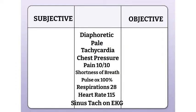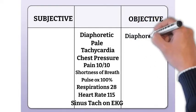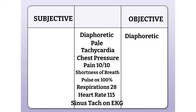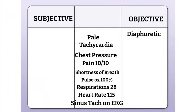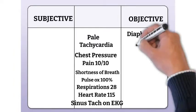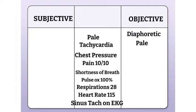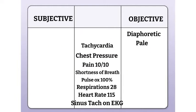The first piece of data is that the patient is diaphoretic. We can see diaphoresis — diaphoresis just means that the patient is sweaty. So diaphoretic would go under objective; we can see it, it's a fact. The next piece of data is that the patient is pale — we can see that the patient is pale, so that's another objective piece of data. The next piece of data is tachycardia. Tachycardia is measurable and observable, so that goes under objective.